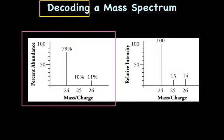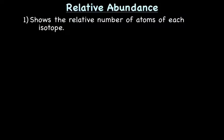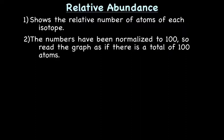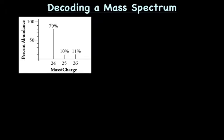We are going to start by discussing the graph that gives us percent abundance — or relative abundance. This type of graph shows the relative number of atoms of each isotope. The numbers have been normalized to 100, so when you read the graph, you read it as if it's out of a total of 100 atoms. So if we look at the graph, 79 of them — 79% — have a mass of 24, 10 have a mass of 25, and 11 have a mass of 26.